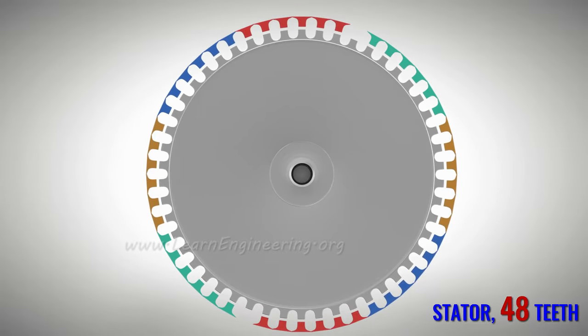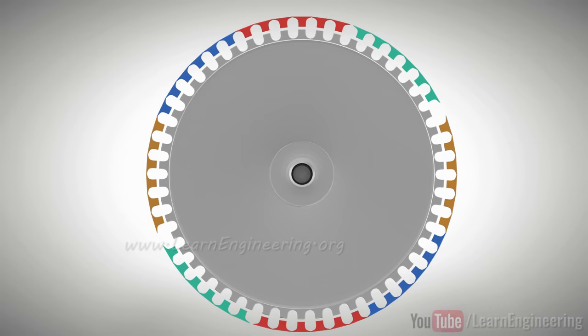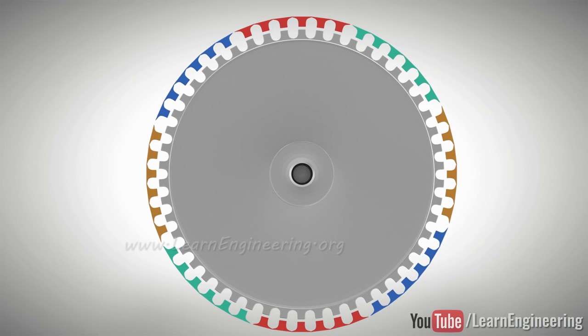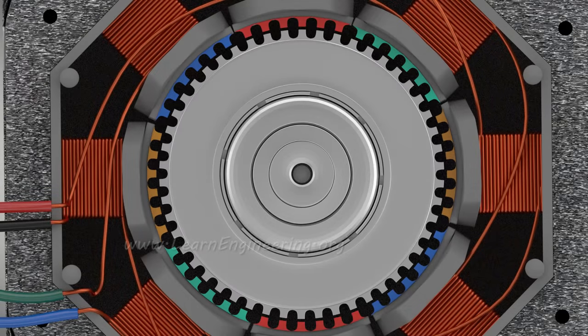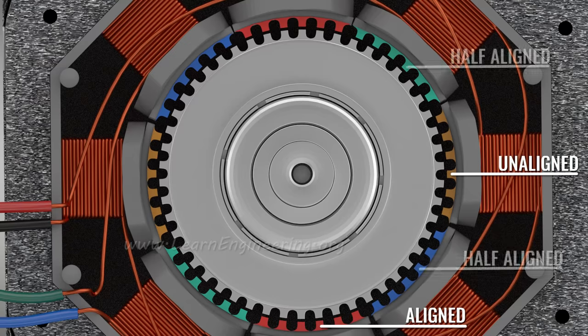Let's arrange the 48 teeth into four group pairs as shown. Now, let's realign these groups. The green set moves so that it is half-aligned with the rotor. The teeth of the yellow group are completely unaligned with the rotor teeth. The blue group is half-aligned with the rotor. The red group remains in place. In short, the red set is completely aligned with the rotor, while the yellow set is unaligned. The other two sets are half-aligned.